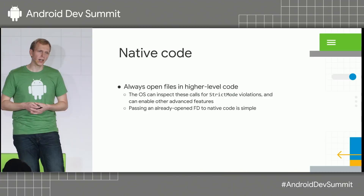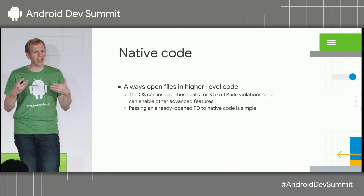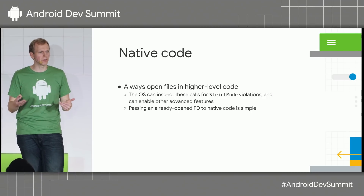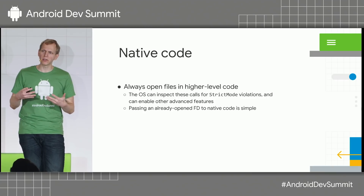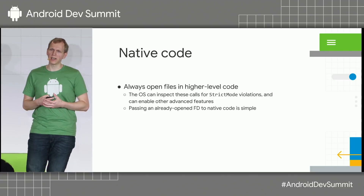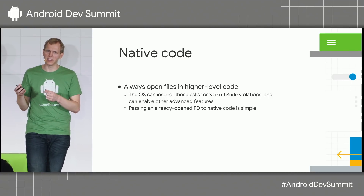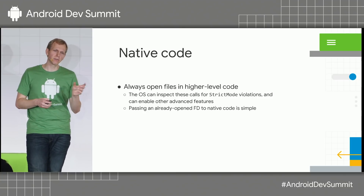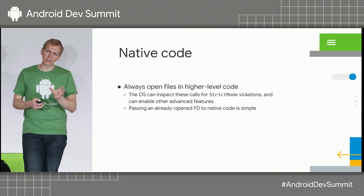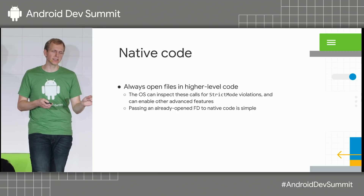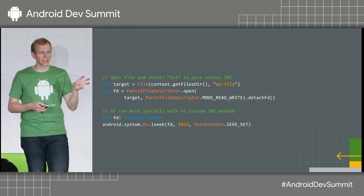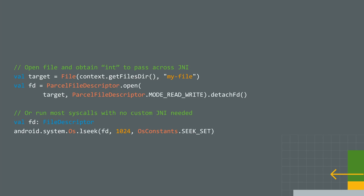For native code, we strongly recommend opening files in higher-level managed code — Java or Kotlin — and passing the already-open file descriptor (the integer) down into native code. Opening in managed code gives the OS the opportunity to notice and correct things, including strict mode violations and whether the thread may cause jank. A quick way to do this is with ParcelFileDescriptor: open a file for read or write, then call detachFd() to get the integer file descriptor to pass across the JNI boundary as a jint.